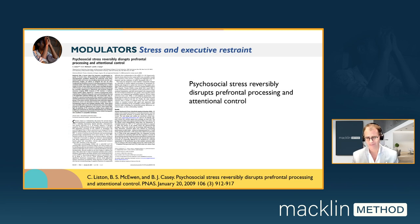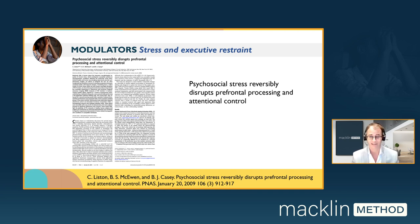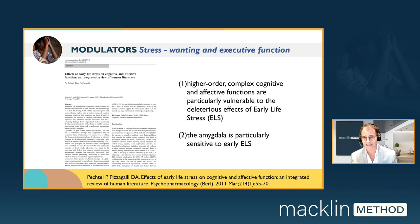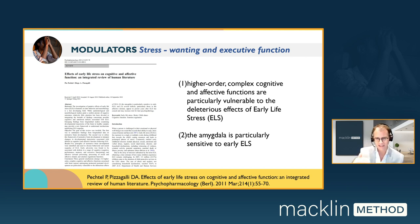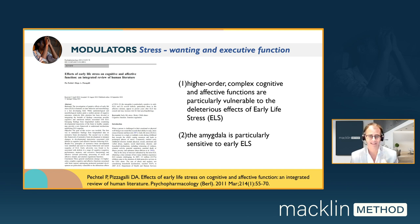What about the executive system? Psychosocial stress can reversibly disrupt prefrontal processing and attentional control, suggesting that executive function and restraint capacities can be significantly down-modulated by stress. We also know that early life stressors play a central role in the risk of obesity. High-order complex cognitive and affective functions are particularly vulnerable to early life stresses, and the amygdala is particularly sensitive to early life stress, both up-modulating wanting and decreasing cognitive restraint capacities.